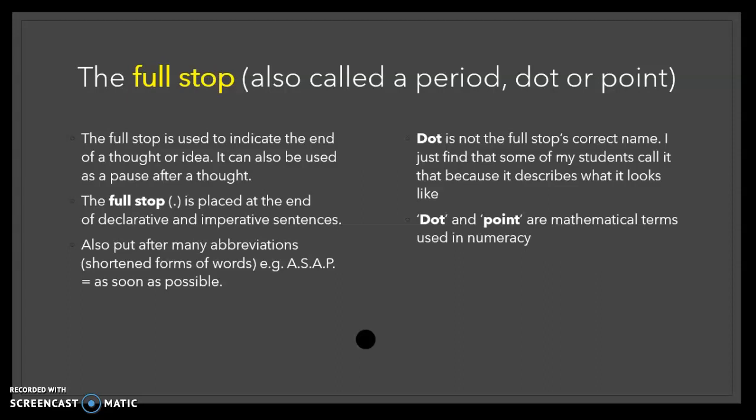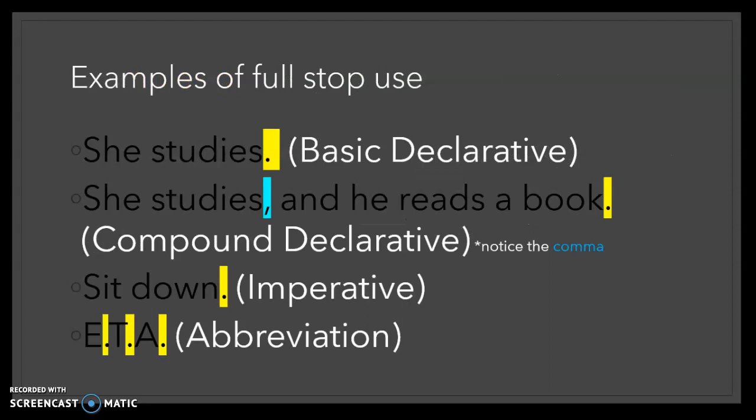So the first one is a full stop, sometimes called a period in America, and some of my students also say dot or point. Dot or point comes probably from numeracy, so it's not really used in English, but we understand what you're talking about because it does look like that. So full stops indicate the end of a thought or an idea. It can be used to pause after a thought and it's placed at the end of declarative and imperative sentences. It is also put in abbreviations such as ASAP, which is as soon as possible.